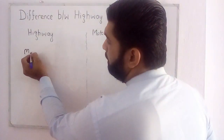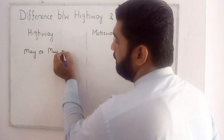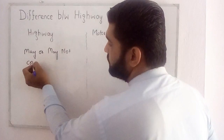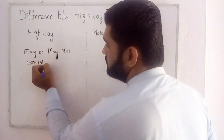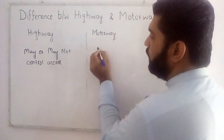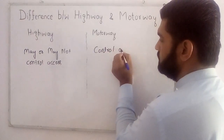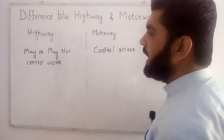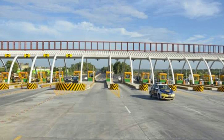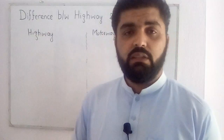When entering a motorway, there will be a toll plaza where you pay tax, and after paying you are allowed to enter. So a highway may or may not have controlled access, while a motorway must have controlled access. You can see a toll plaza in the picture — this is where you pay the tax.